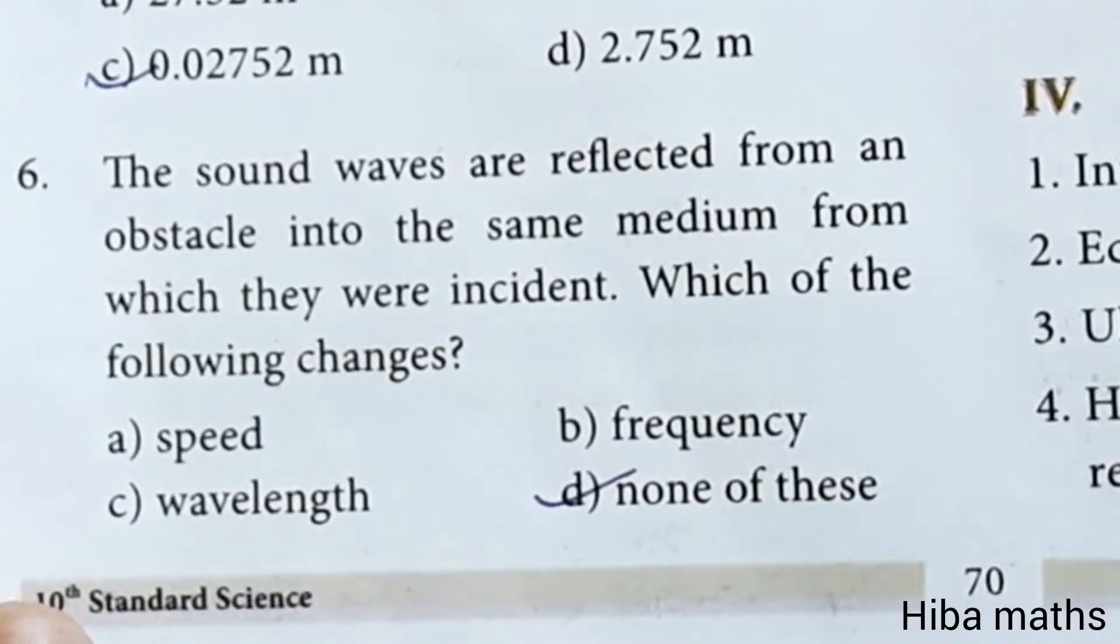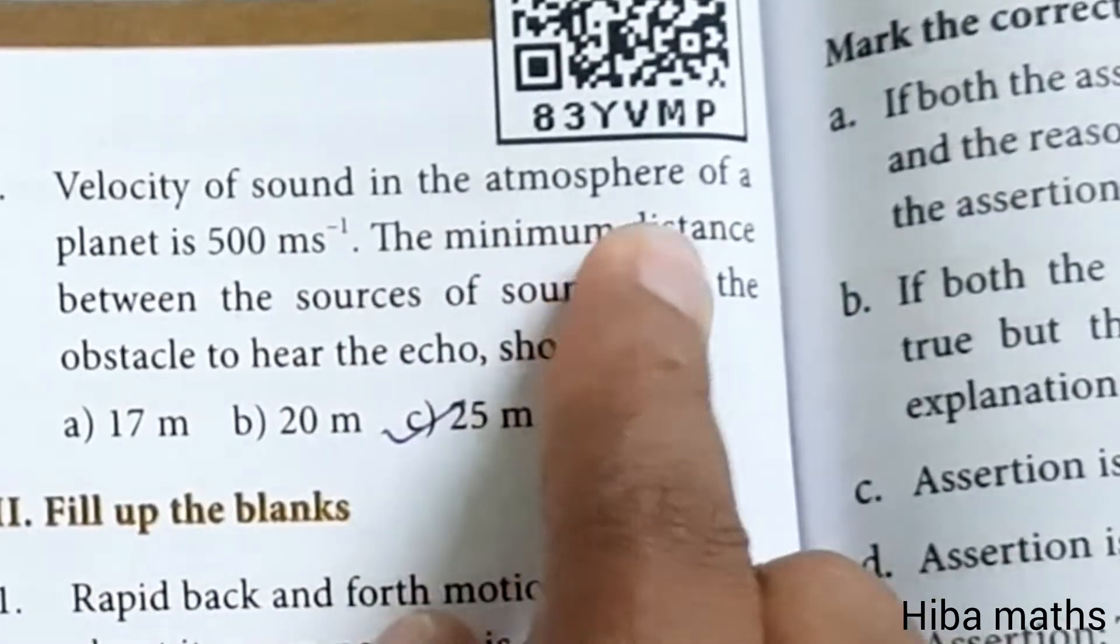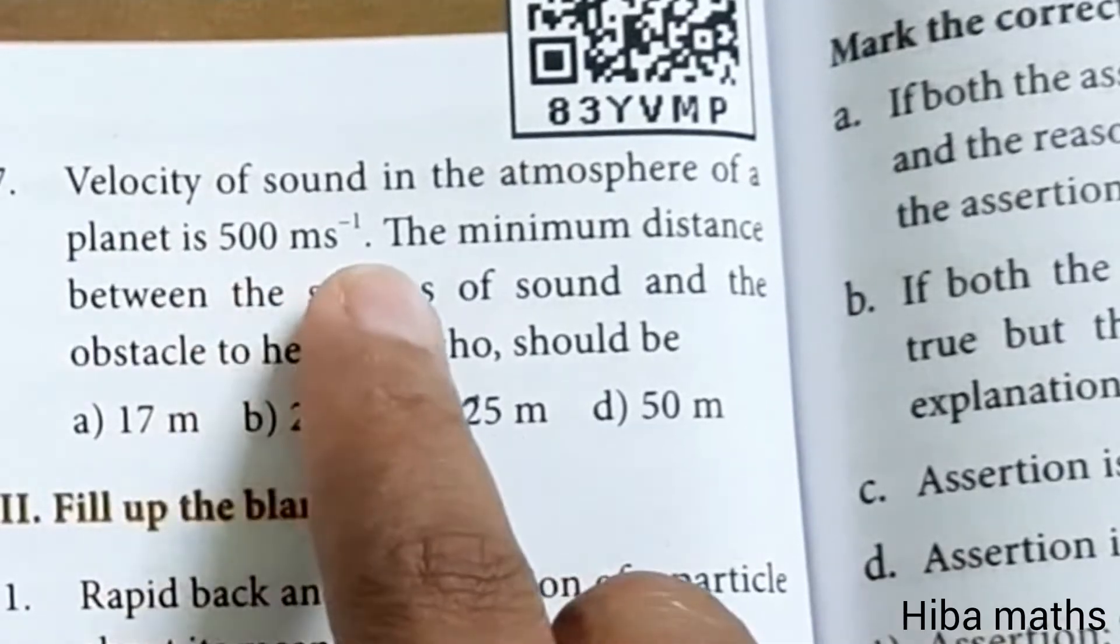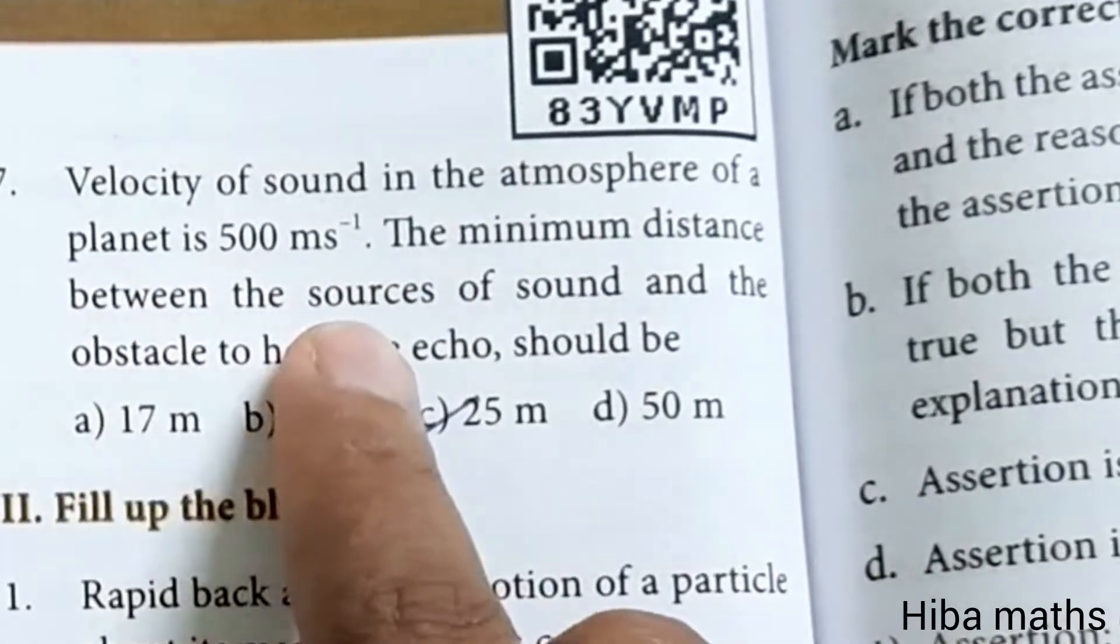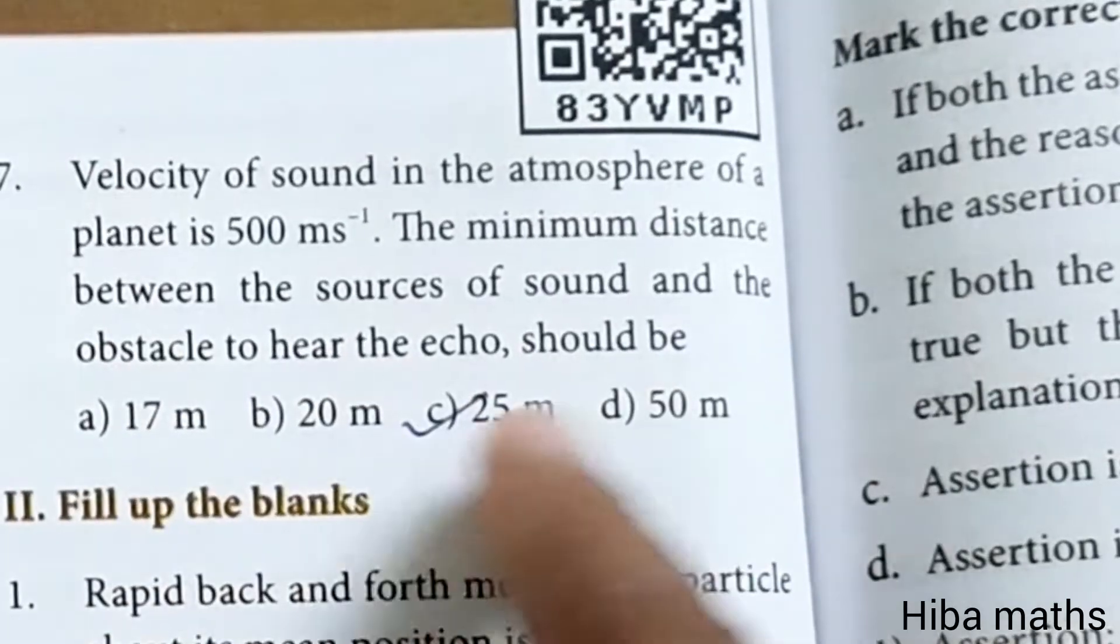Seventh question: velocity of sound in the atmosphere of a planet is 500 meter per second. The minimum distance between the source of sound and the obstacle to hear the echo should be 25 meter. Now, fill in the blanks.